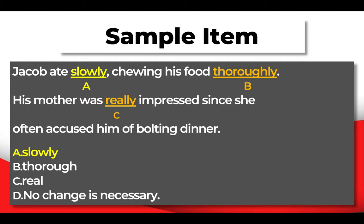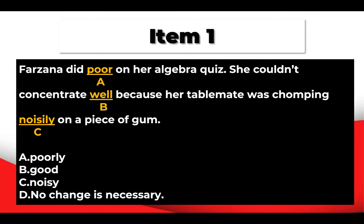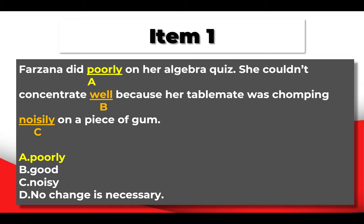Jacob ate slowly — not slow. Slowly, how did he eat? Slowly is an adverb modifying the verb. Item number one — the answer is A: poorly, not poor. Farsana did poorly on her algebra quiz. She couldn't concentrate well because her table mate was chomping noisily on a piece of gum. Poorly modifies the verb did.